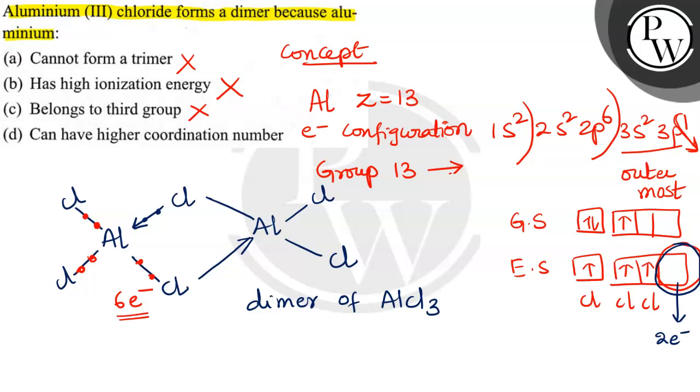Correct option is D: can have higher coordination number. Option D is correct.